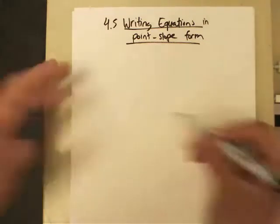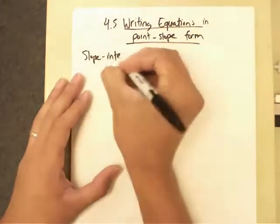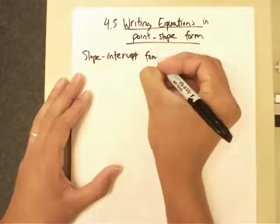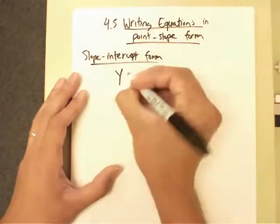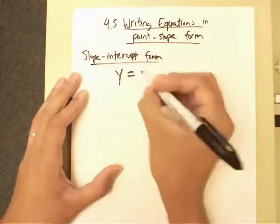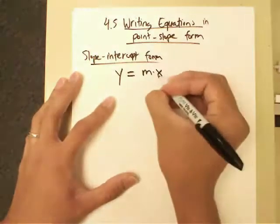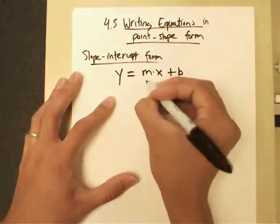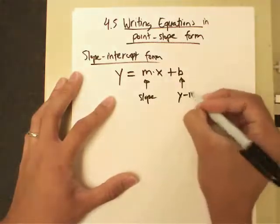I'm just going to do a quick review here with you of the slope-intercept form. Now notice the slope-intercept form will have your dependent variable by itself, and the slope times the independent variable, so m times x, plus b. m is your slope as you can see and b is your y-intercept.